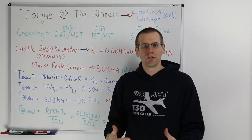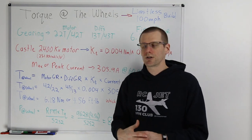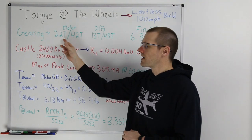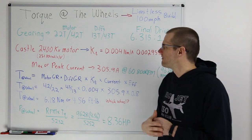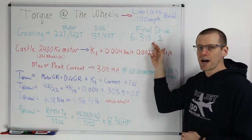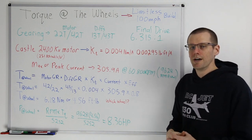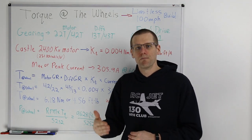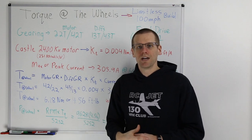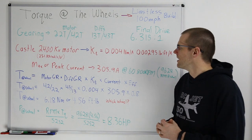And then for our differentials, we have the stock 13 tooth input as well as the 42 tooth differential. Now if you take these two and you divide them from one another, you're going to get a value. And if you multiply those two values, you're going to get a final drive ratio of 6.315 to one. This represents how many times that motor has to spin or rotate in order to get one revolution out of the wheels or the tires on the vehicle.